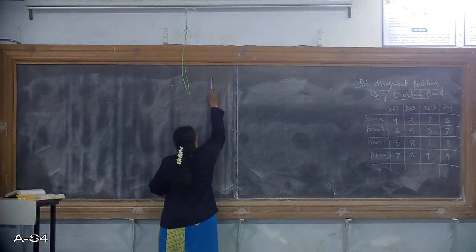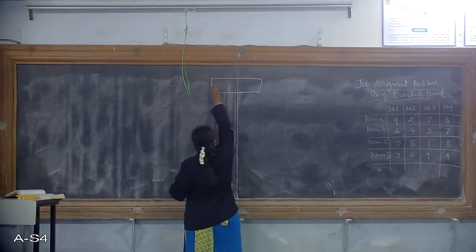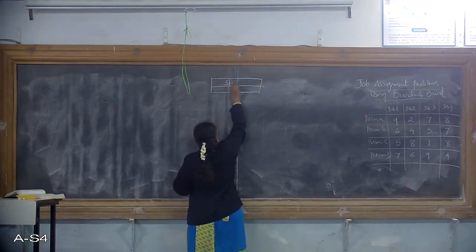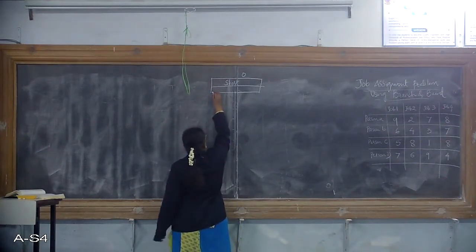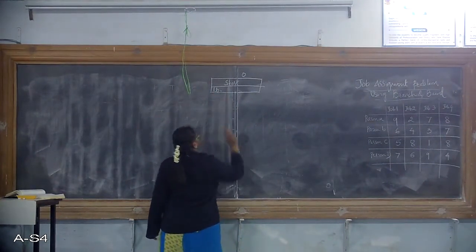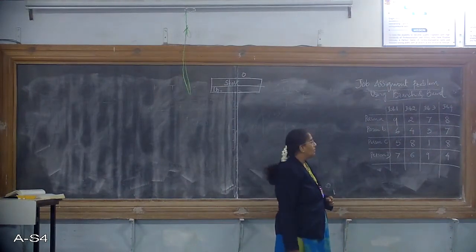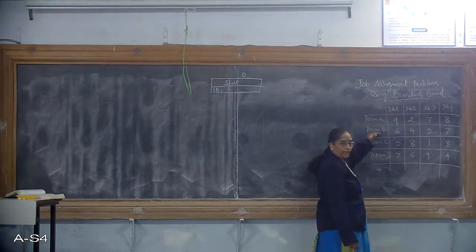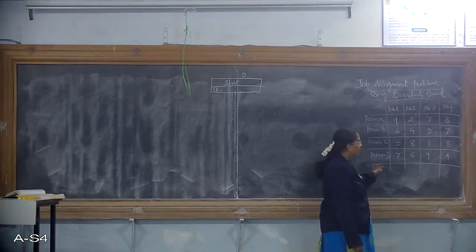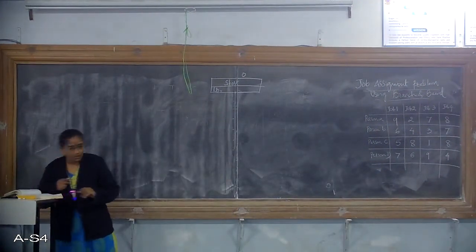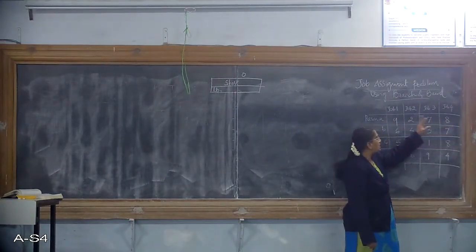Starting with node number zero, the root node. For the root node, the lower bound value is calculated by tracing each row, finding the smallest element of each row, and summing them. In the first row, the smallest value is 2.